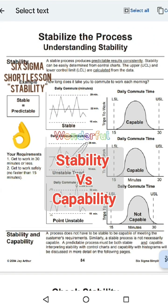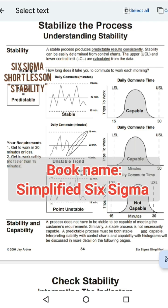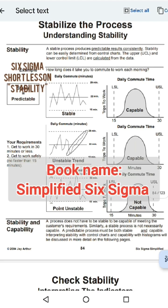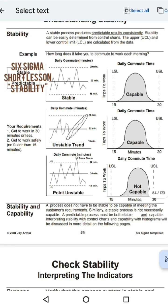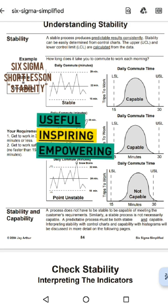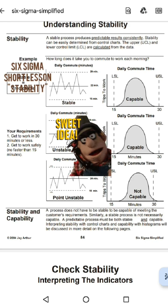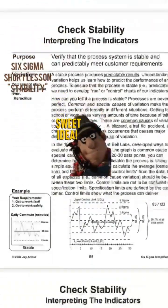This book covers the wonderful difference between stability and capability. It is a very useful topic in Lean Six Sigma, and more importantly, the interpretation of control charts is well elaborated.